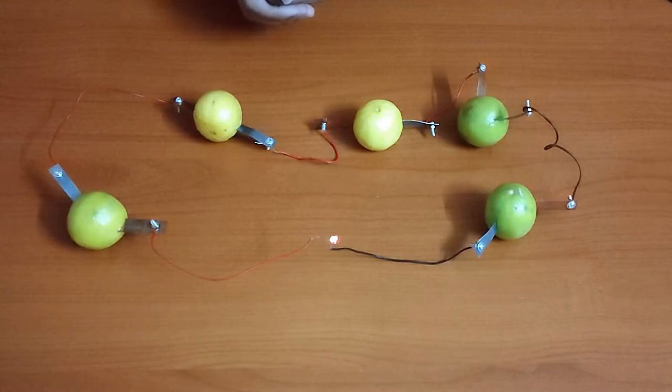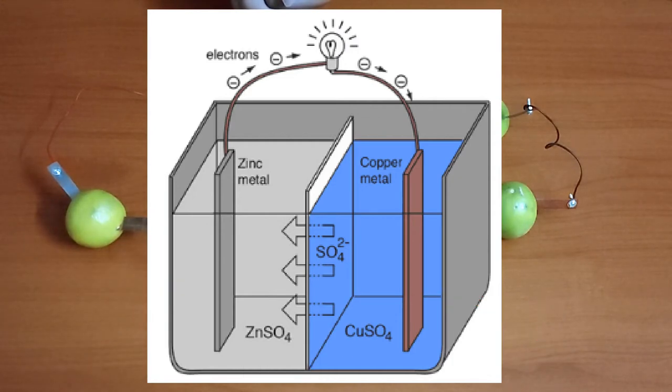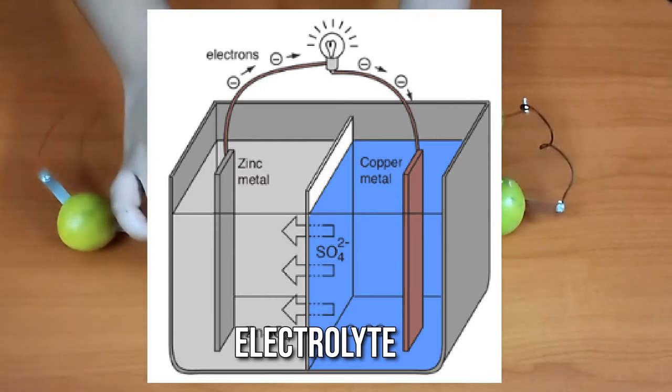In a conventional battery, there are two electrodes of two different metal pieces, usually copper and zinc, submerged in an acidic solution called electrolyte and connected through external wiring to a small bulb.